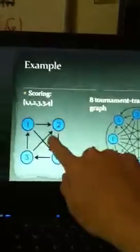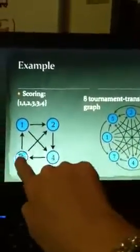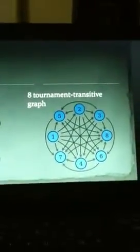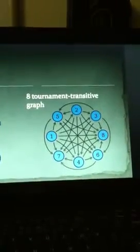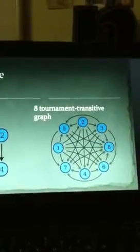For example, this graph has out-degrees 1, 1, 2, 3, 3, 4. You arrange them in non-decreasing order. This one is an example of an 8-vertex transitive tournament graph, and you can see how 5 goes to 8, the whole structure.